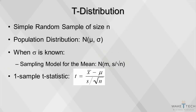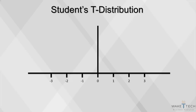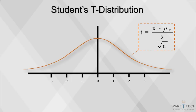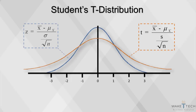When the standard deviation is estimated from the sample standard deviation s, the sampling model follows a t-distribution with degrees of freedom n minus 1. This is the one-sample t-statistic. In this figure, both distributions have zero means, but the variances are a bit different. The t-distribution has a lower peak and fatter tails.